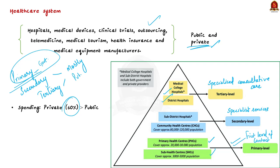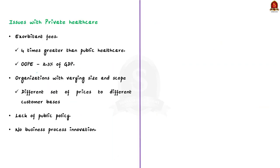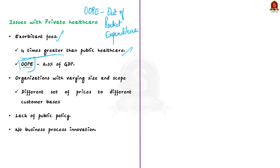When it comes to healthcare, we are more worried about expenditure — especially for private hospitals, which charge exorbitant fees. For local Indians, the cost of private healthcare is about four times greater than public healthcare. That is why out-of-pocket expenditure is very high in India, around 2.3% of GDP. Out-of-pocket expenditure is what we spend directly from our own pocket for healthcare services. The second issue is that the government is unable to fix a consolidated price for services in the private sector, because existing private healthcare organizations are of varying size and scope due to income disparities and different regulations.